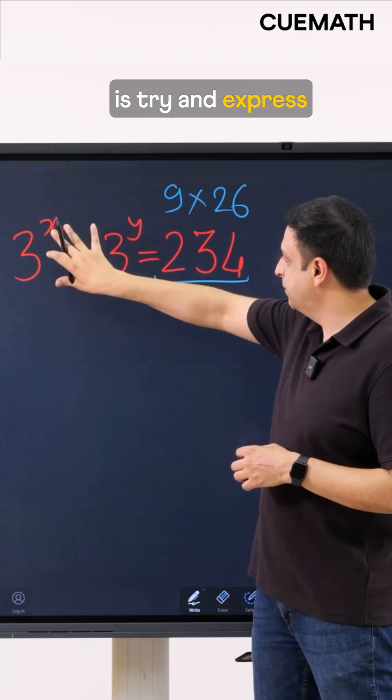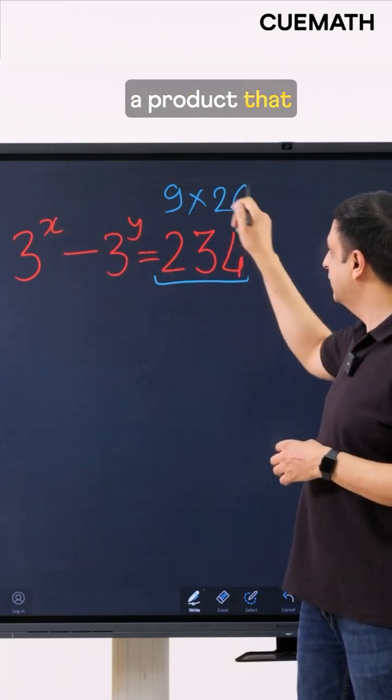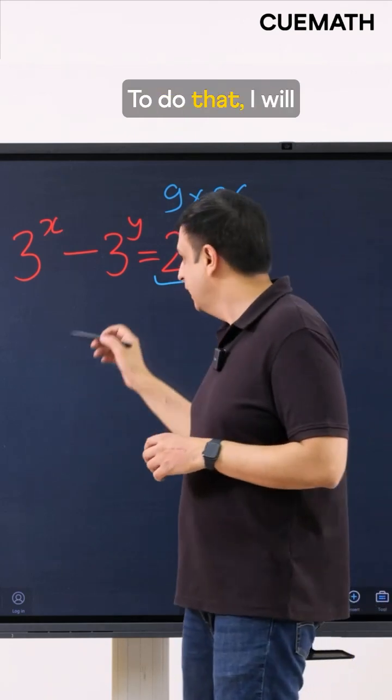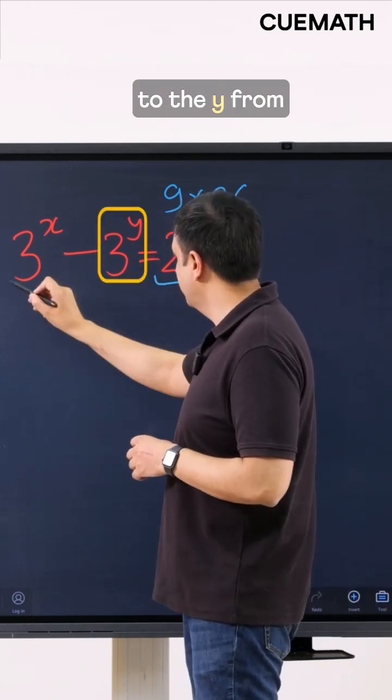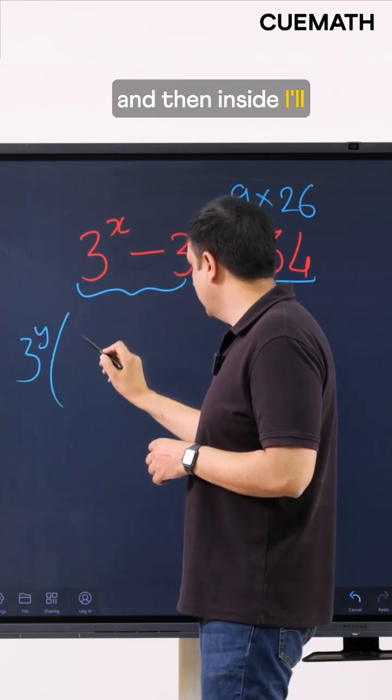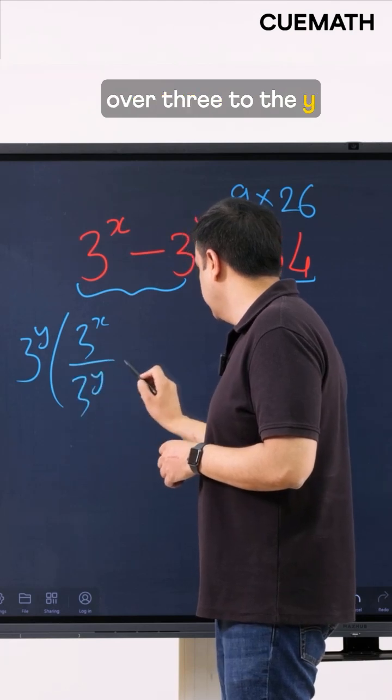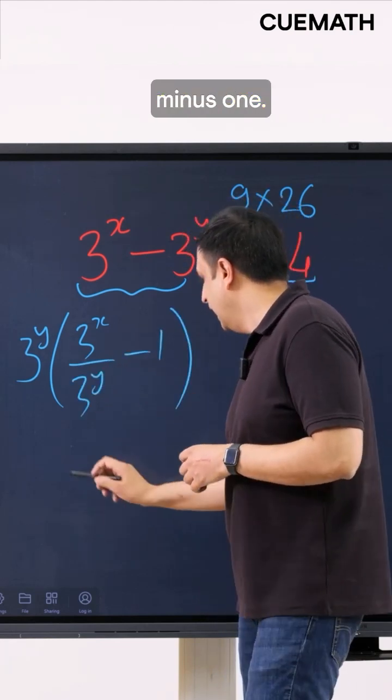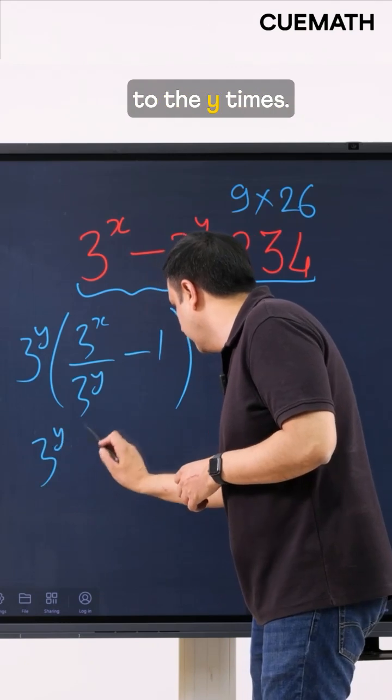What I'll do now is try and express the left side as a product that resembles this form. To do that I will factor out 3 to the y from this expression. I'll factor out 3 to the y and then inside I'll get 3 to the x over 3 to the y minus 1 and this is 3 to the y times.